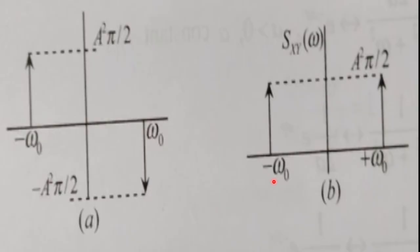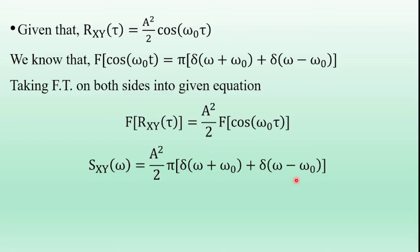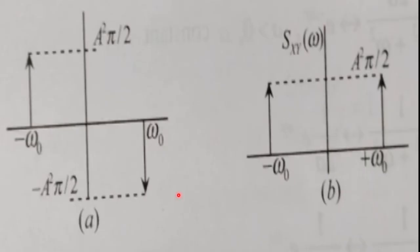This is the graphical representation of the Fourier transform of the first part, and this is the graphical representation of the second part. In the second part, the frequency function exists at plus or minus omega-naught. At plus omega-naught, the magnitude value is a-squared*pi over 2, and at minus omega-naught, the magnitude value is also a-squared*pi over 2.